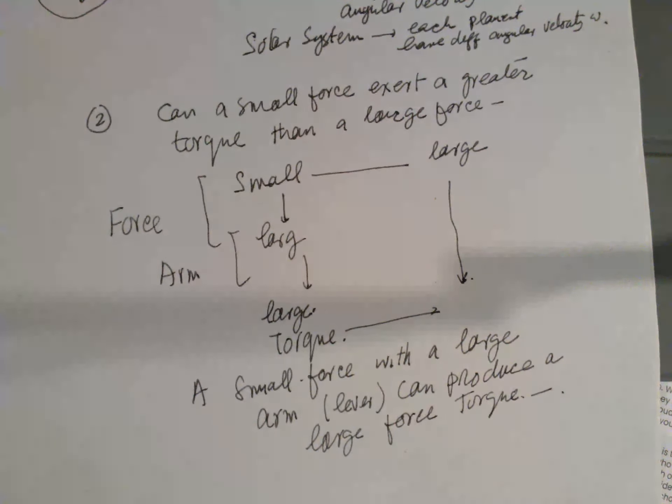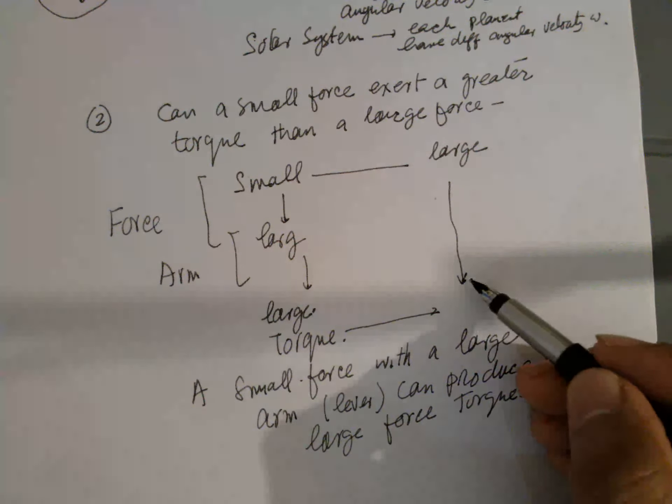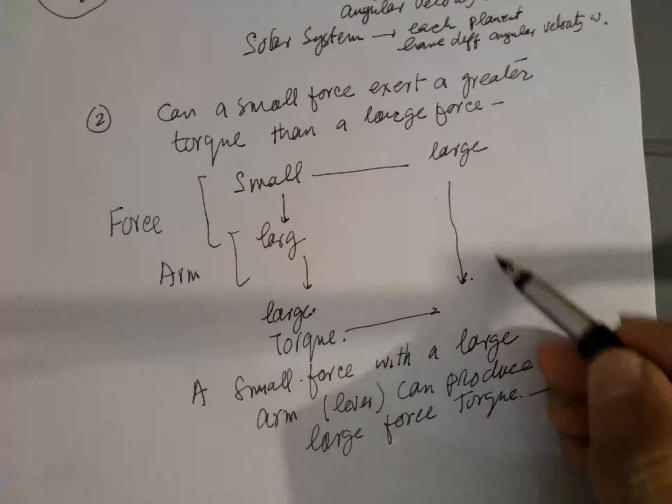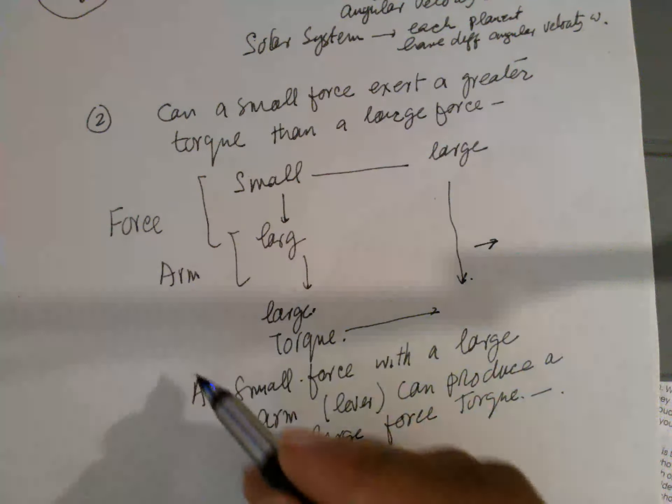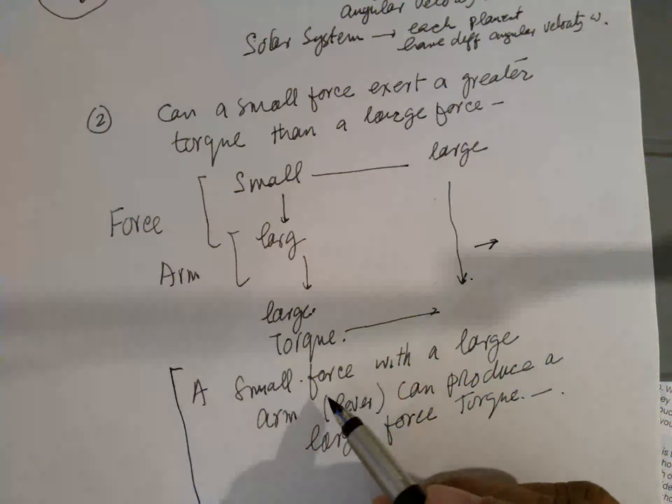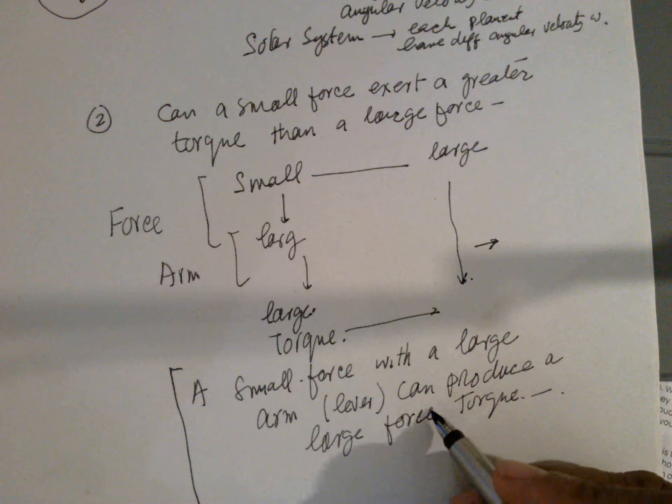So the answer is: a large force with a small arm creates smaller torque, and there is wastage in using a large force. A small force with a large arm can produce a large torque with less effort.